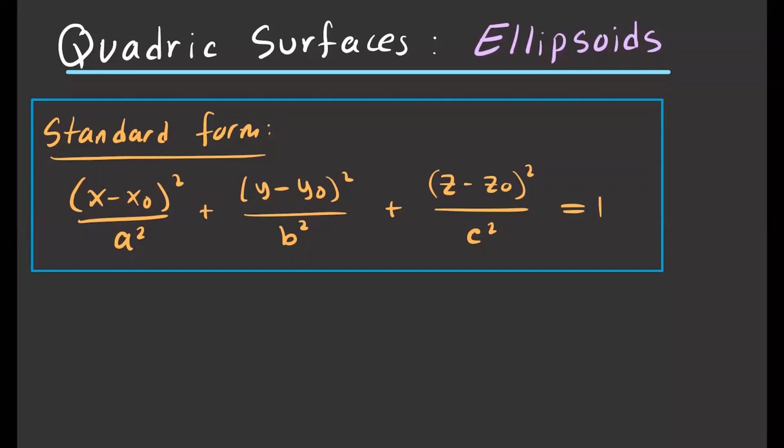Here's the standard form: you have x minus x-naught squared over a squared, same thing for y squared over b squared, and the same for z squared over c squared. This is all equal to 1, so keep that in mind. The constants a, b, and c are all squared.